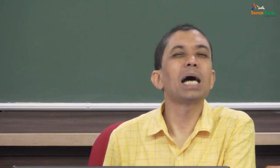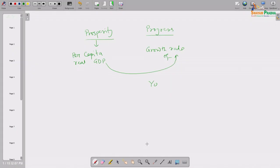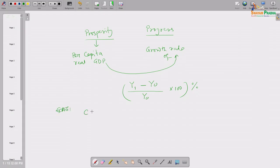Growth rate is usually calculated per year. If yesterday's per capita real GDP was y₀ and today's is y₁, then the growth rate is (y₁ − y₀) / y₀ × 100 percent. That is the year-on-year growth rate. Another concept is Compound Annual Growth Rate — CAGR.